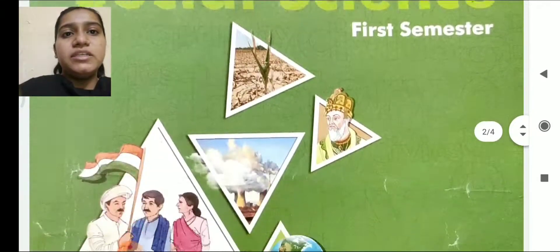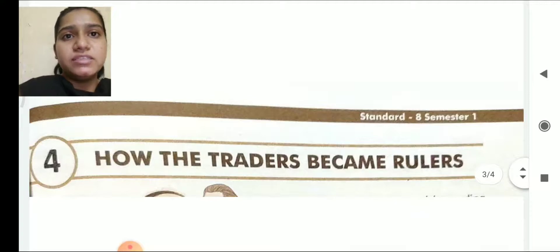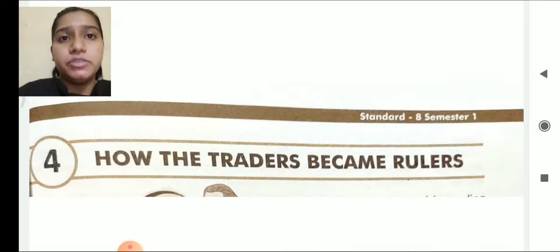My dear students, during the previous lectures when unit number 4 was discussed, the question answers of unit number 4 was pending. So today, I am sharing the question answers PDF of unit number 4, that is, how traders became rulers.